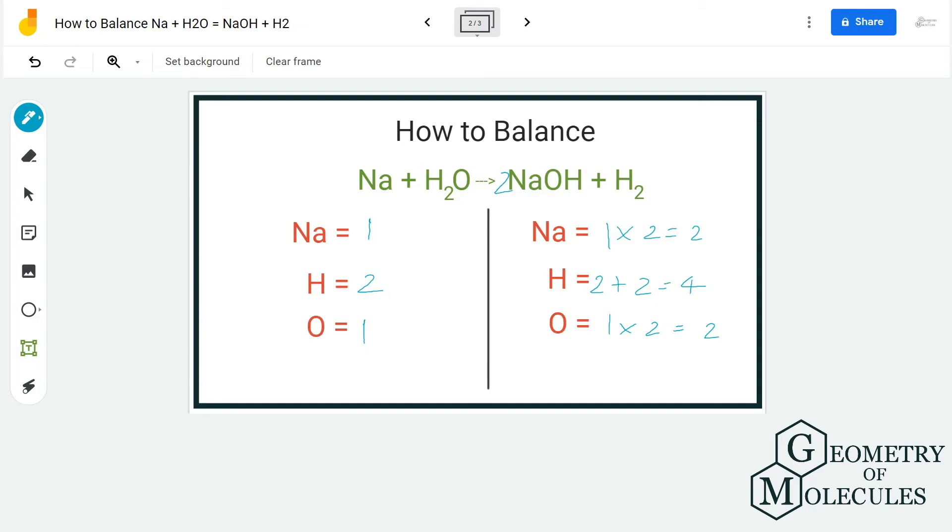And now we will go to the reactant side. We'll add two over here to balance this equation. So for hydrogen we have four, for oxygen we have two, and you can see here the sodium atom is still, there is only one sodium atom on the reactant side, so to balance it we are going to put the coefficient two over here as well.